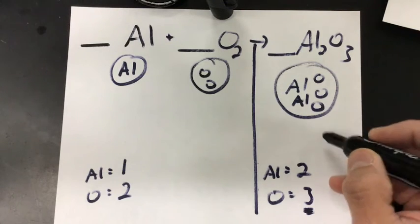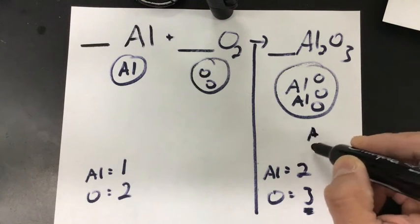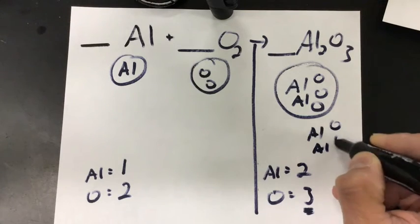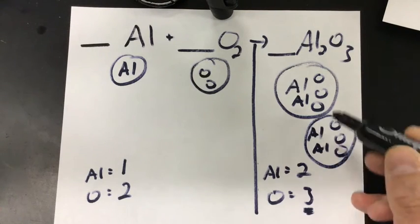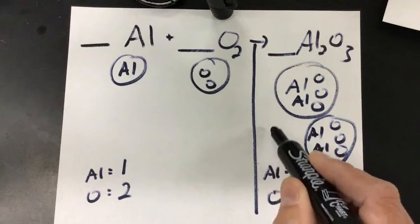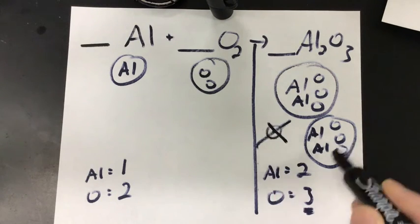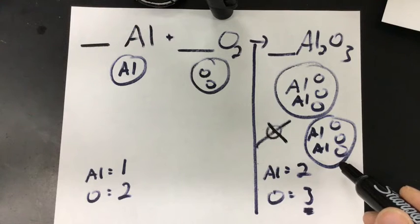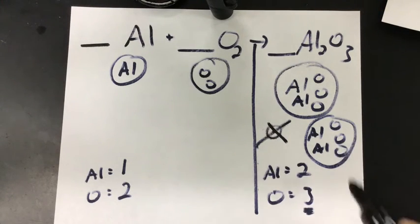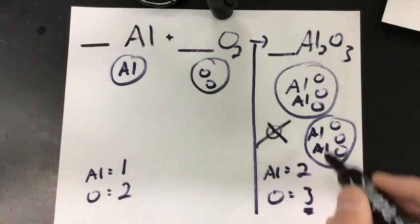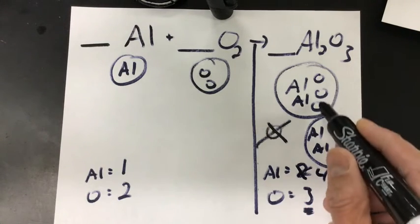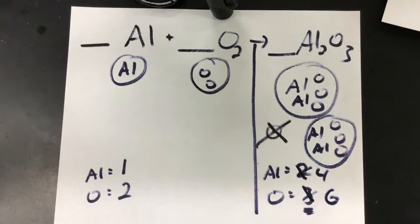I'm going to make AL another whole set. Okay, remember I can't just add a singular O. I can't just do this and add one O there. I can't do that. I have to add the whole thing. So I can't even it out just by adding one. I have to add the whole thing. So now I have four ALs and six O's.